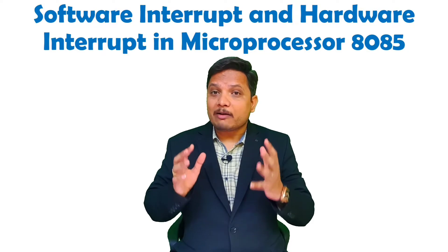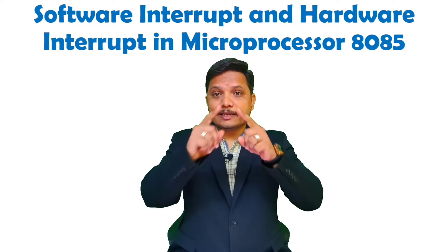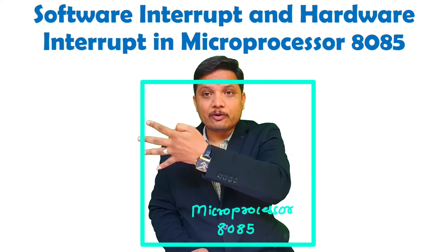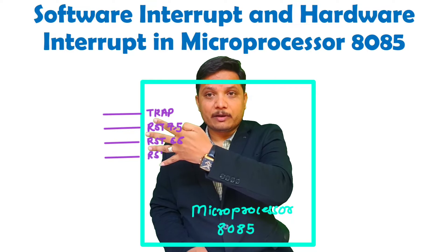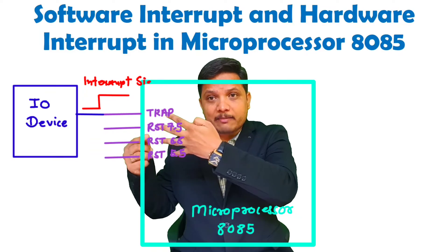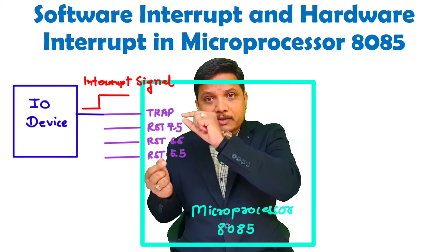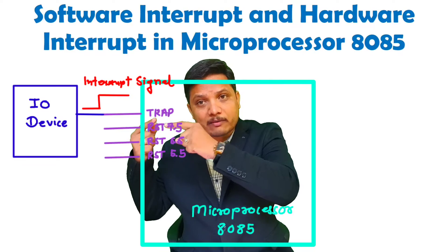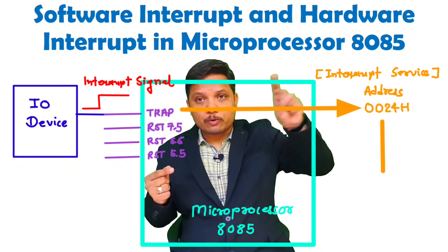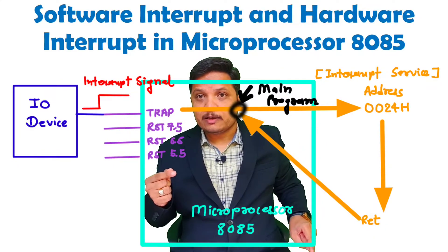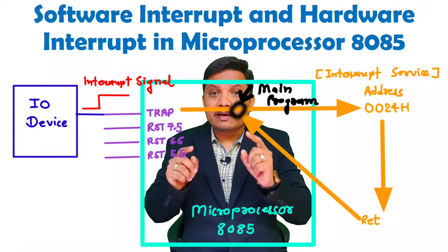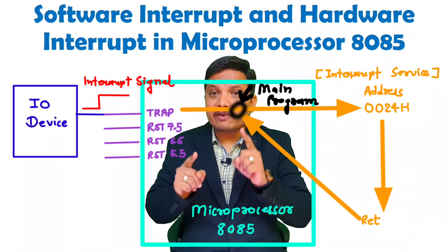When we talk about hardware interrupt, consider microprocessor 8085 — it has four pins which receive hardware interrupts. Whenever an external device gives an interrupt, each of these pins has a well-defined memory location, and whatever interrupt is triggered will go to the interrupt service routine inside microprocessor 8085.